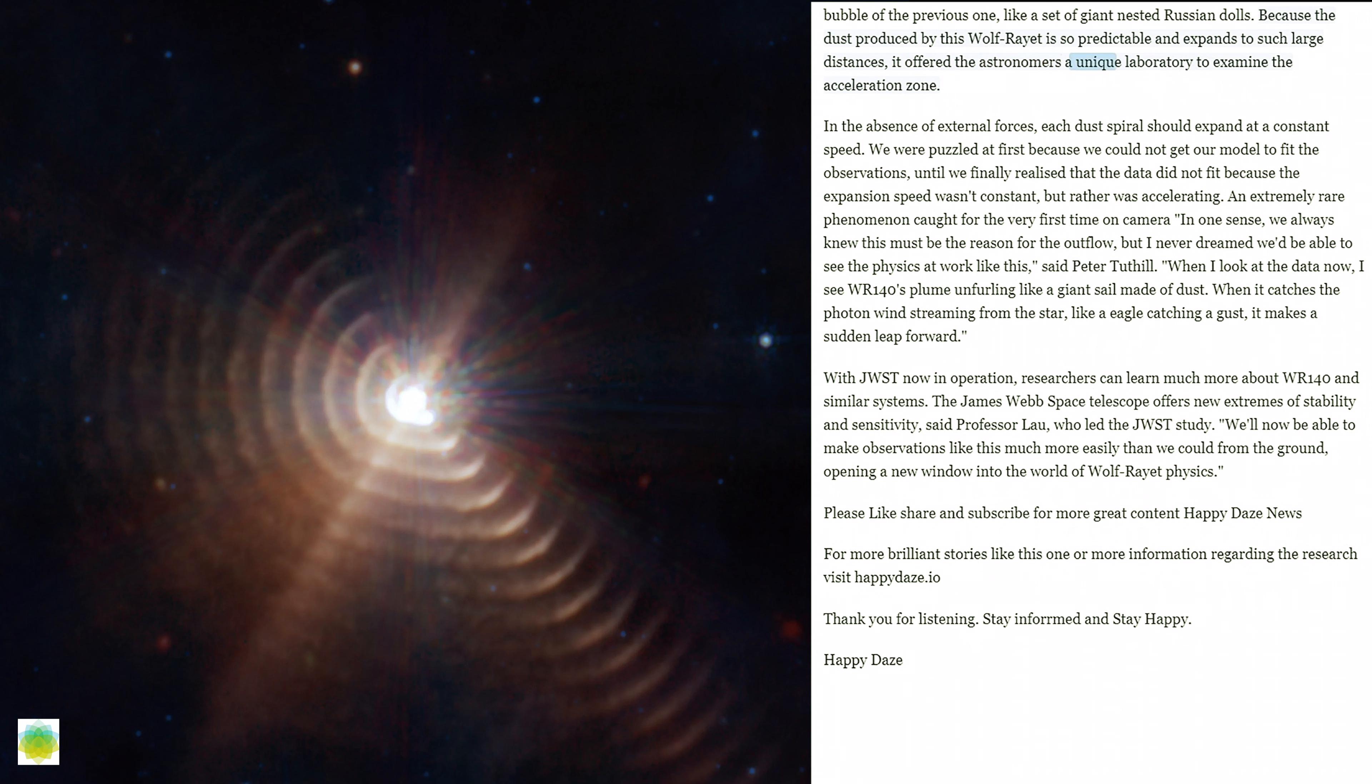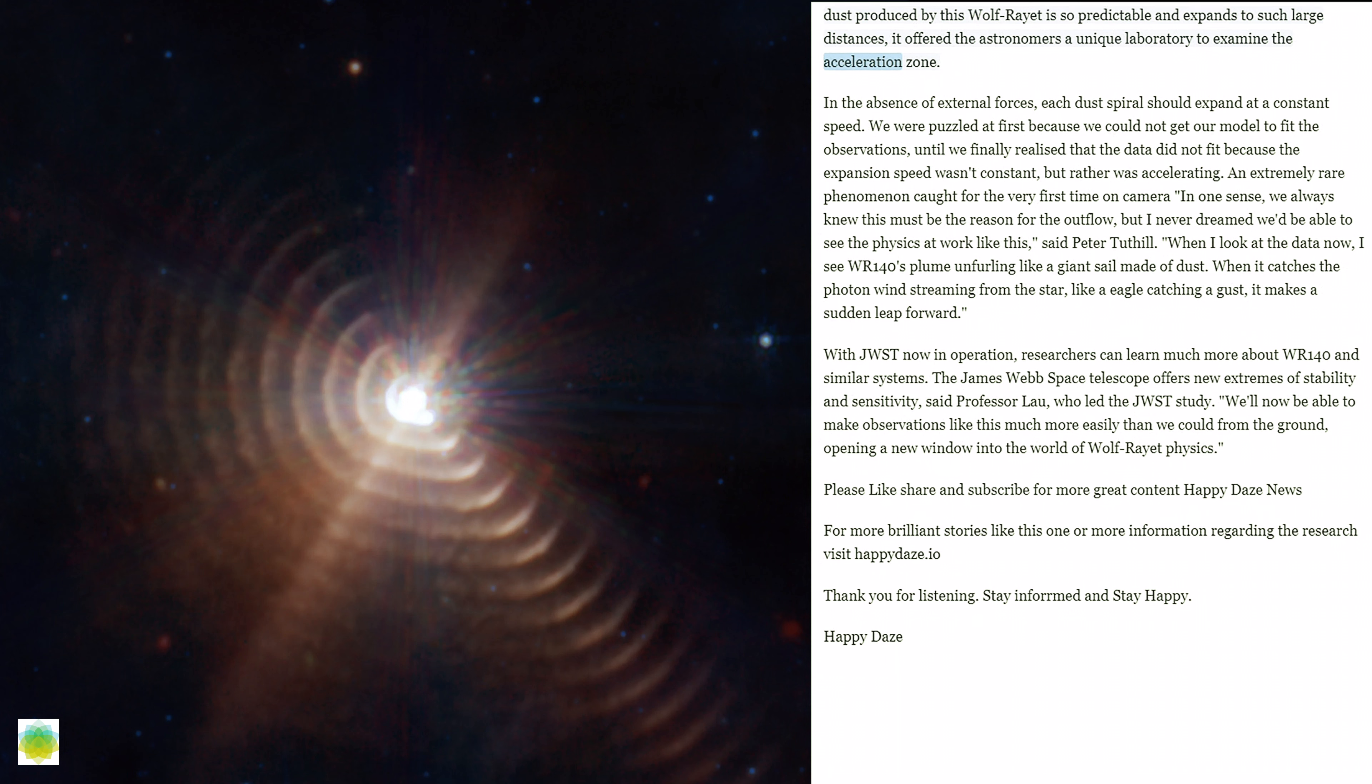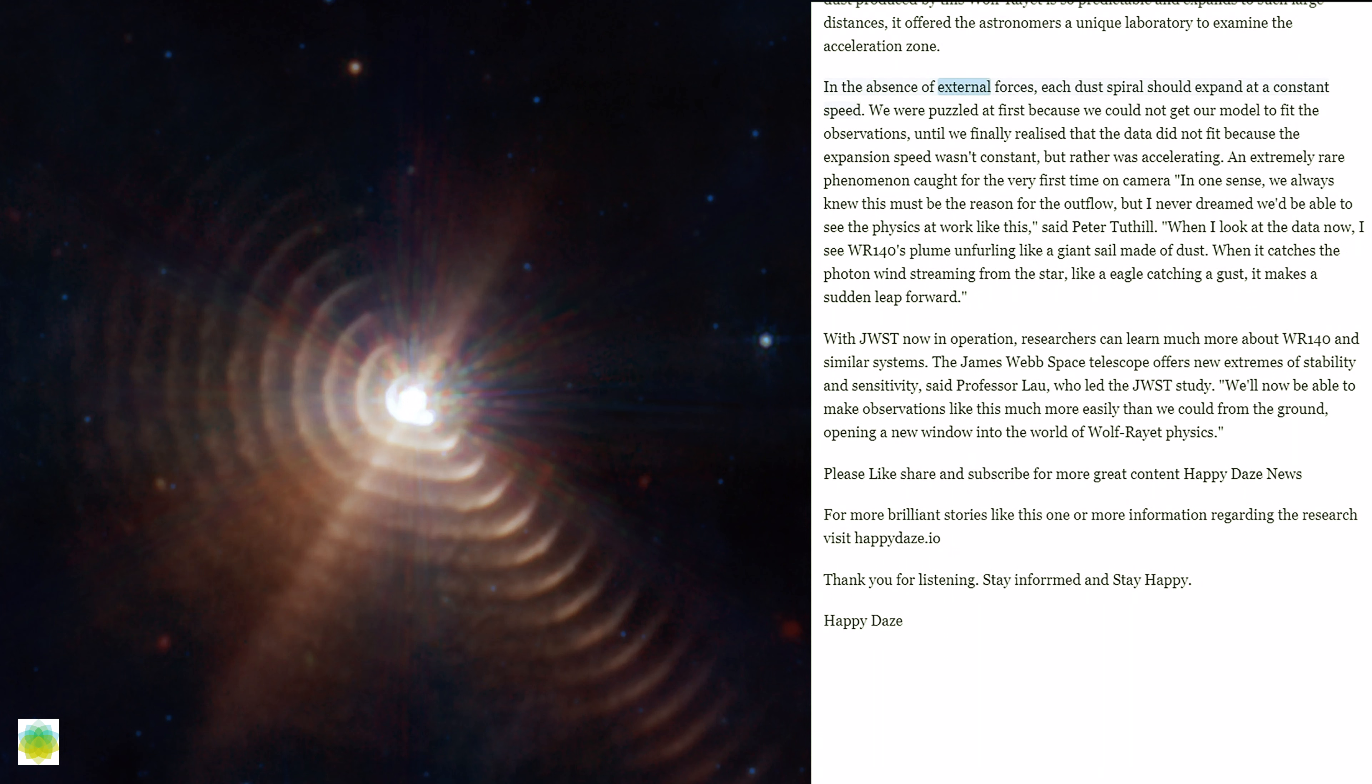Because the dust produced by this Wolf-Rayet is so predictable and expands to such large distances, it offered the astronomers a unique laboratory to examine the acceleration zone. In the absence of external forces, each dust spiral should expand at a constant speed. We were puzzled at first because we could not get our model to fit the observations, until we finally realized the data did not fit because the expansion speed wasn't constant, but rather was accelerating—an extremely rare phenomenon caught for the very first time on camera.